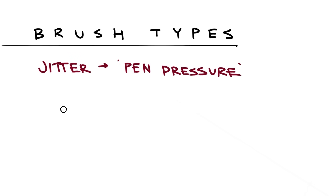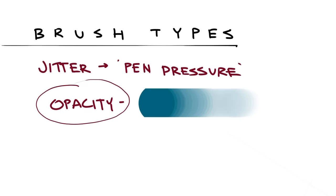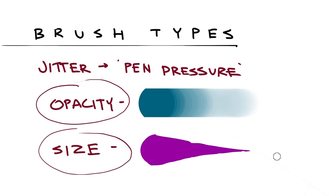Most commonly, this is used with opacity, to make the brush more transparent when you press lightly, and also with size, to make the brush smaller when you press lightly. Brushes can have as many combinations of these features as they want, but we'll be keeping things nice and simple for now.